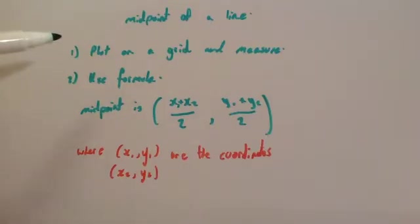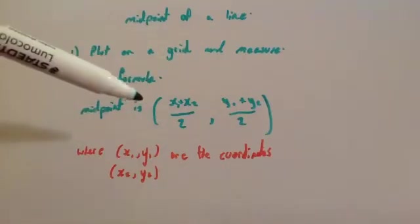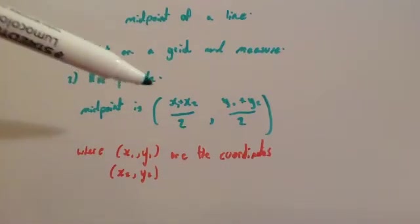So the first method is to plot them on a grid and measure. Simply you just plot them on a grid, you measure the line, you mark on where the middle of the line is and then that would be the midpoint.